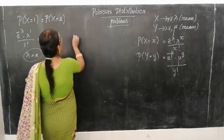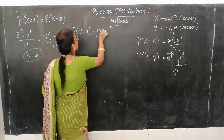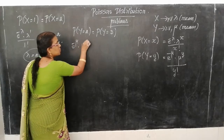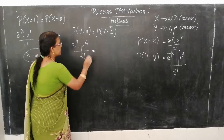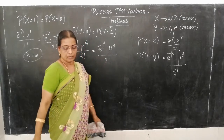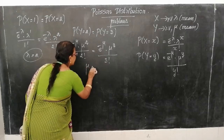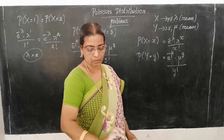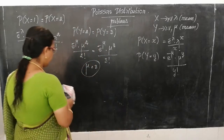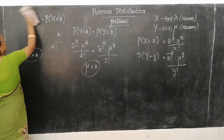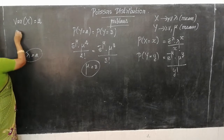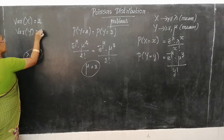From the condition P(Y = 2) = P(Y = 3): e^(−μ) · μ² / 2! = e^(−μ) · μ³ / 3!. Simplifying gives μ = 3. So λ = 2 and μ = 3. For a Poisson distribution, variance equals the mean, so Variance(X) = λ = 2 and Variance(Y) = μ = 3.